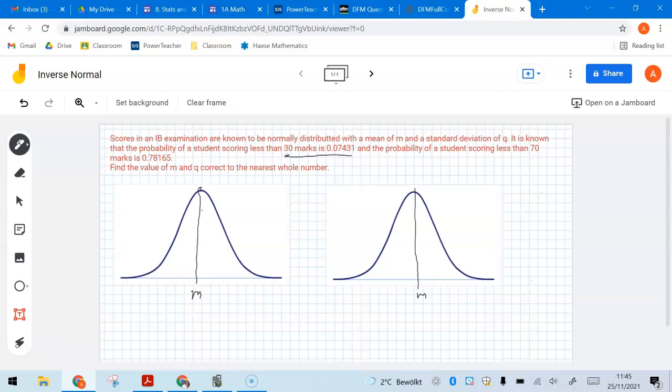So on the first one, less than 30. And I've got that shaded area as 0.07431. And over here, I've got 70. It's less than 70. Now, the reason I put 70 onto the right of the m is because I already know this is more than a half. So this is 0.78165.